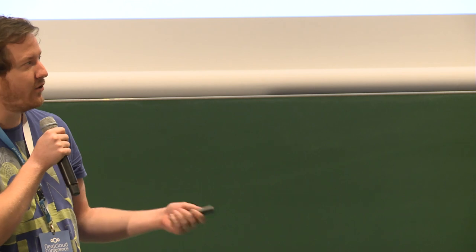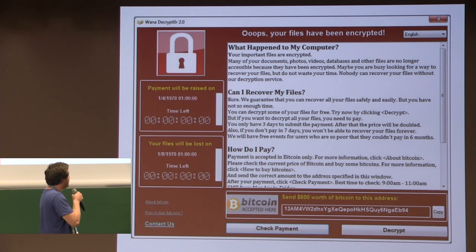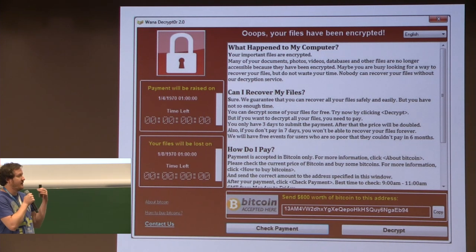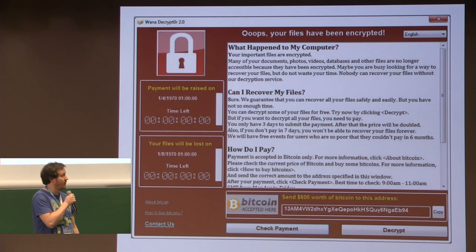Ransomware differs from classical malware, where classical malware normally works in stealth and performs all its behavior undetected, hopefully. But ransomware encrypts your files, modifies your files, and afterwards notifies you with a pop-up or desktop icon where they request that you pay a ransom — here $600. This behavior, which is fully visible at the end, is used by us to analyze what has been done.